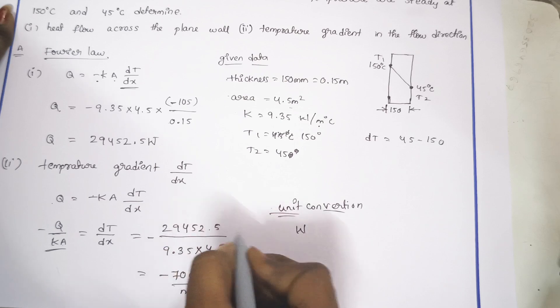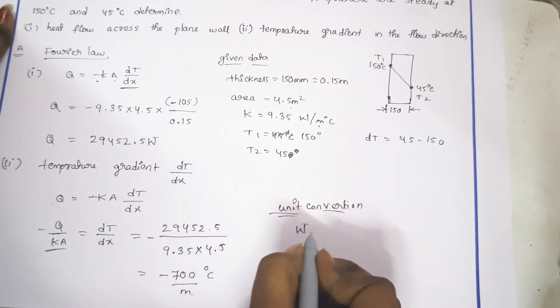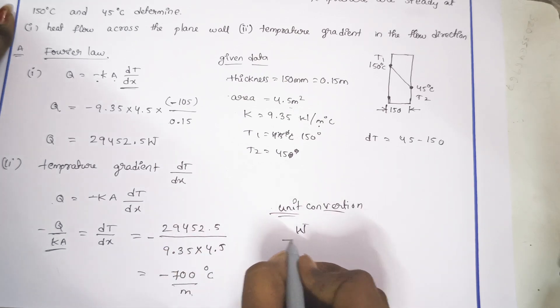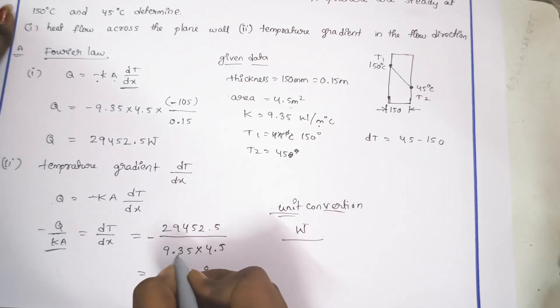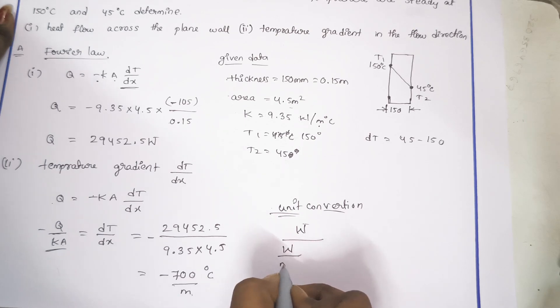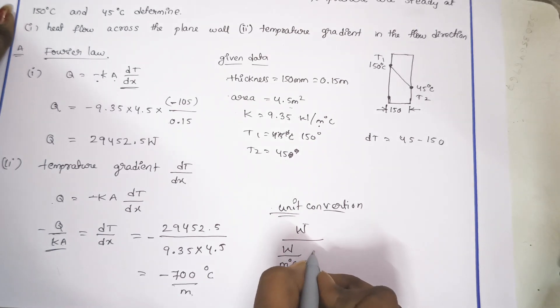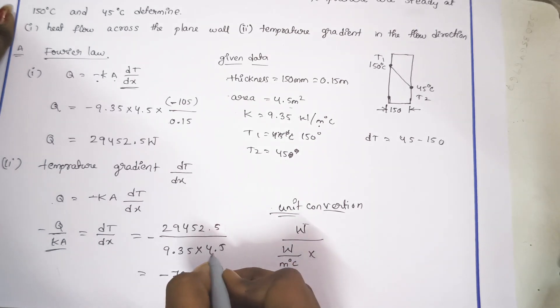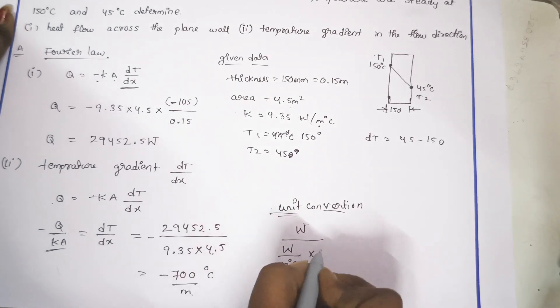Q is in Watts. Thermal conductivity is in Watt per meter centigrade. This is meter squared.